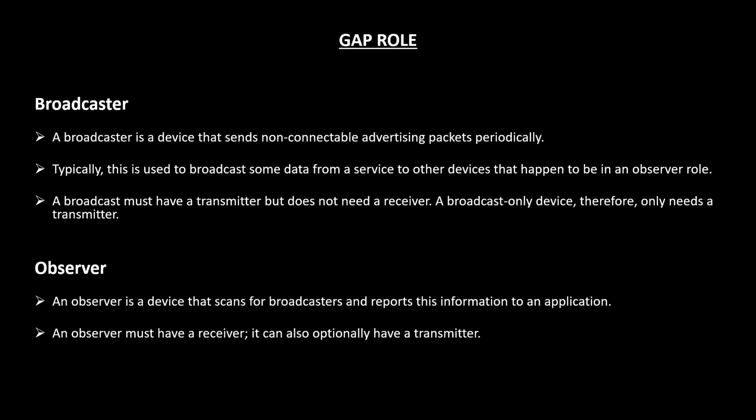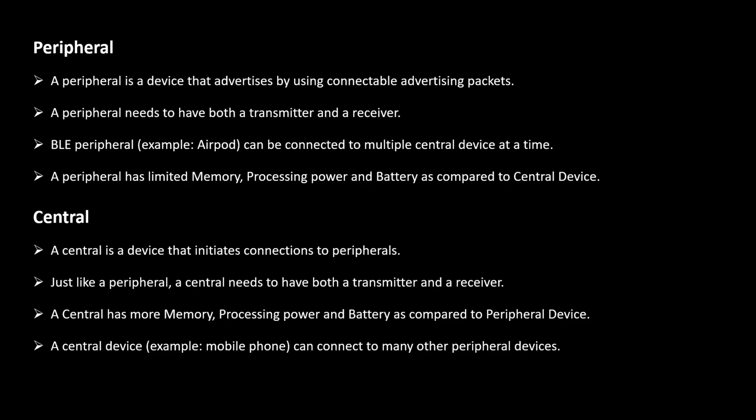An observer is a device that scans for broadcasters and reports the information to an application. An observer must have a receiver and can optionally have a transmitter. So an observer is the opposite of a broadcaster — the broadcaster sends data and doesn't receive, while the observer receives data and doesn't send. A peripheral is a device that advertises using connectable advertising packets, similar to a broadcaster but connectable, so both a transmitter and receiver are needed. A BLE peripheral can be connected to multiple central devices. Examples of peripherals include earbuds and the ESP32 module.